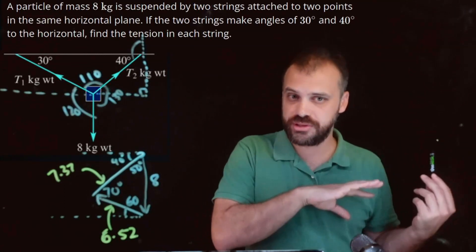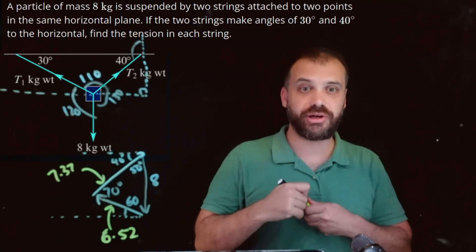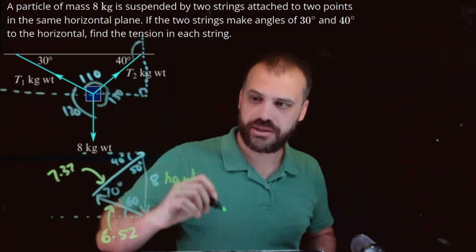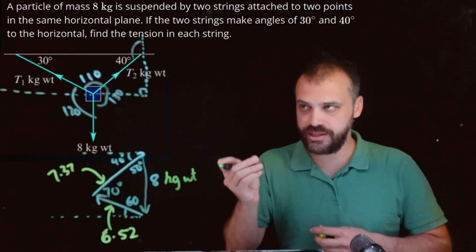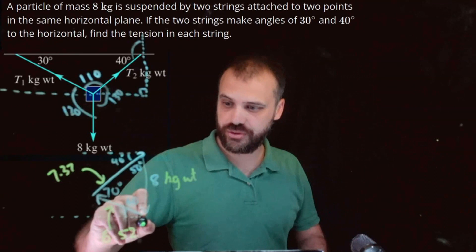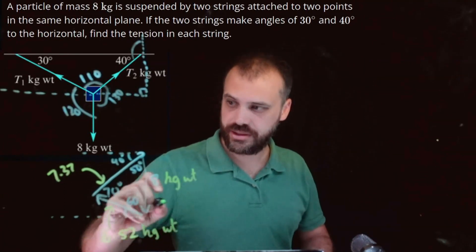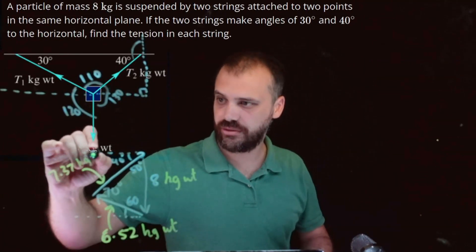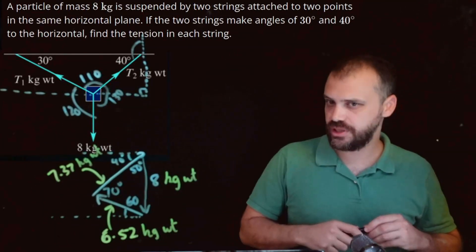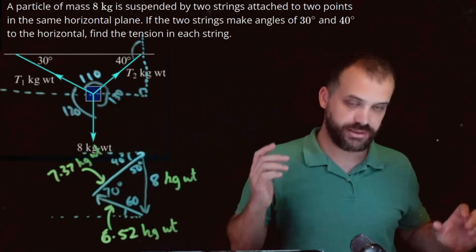The other thing I'll mention is I haven't been talking about units here. Some people talk in newtons. Some people talk in kilogram weight. I'm going to be talking in kilogram weight for the most part. So 8 kilogram weight is the particle. 8 kilograms going straight down. 6.52 kilogram weight. And 7.37 kilogram weight. They're going to be our units of force here. Alright, that is it.